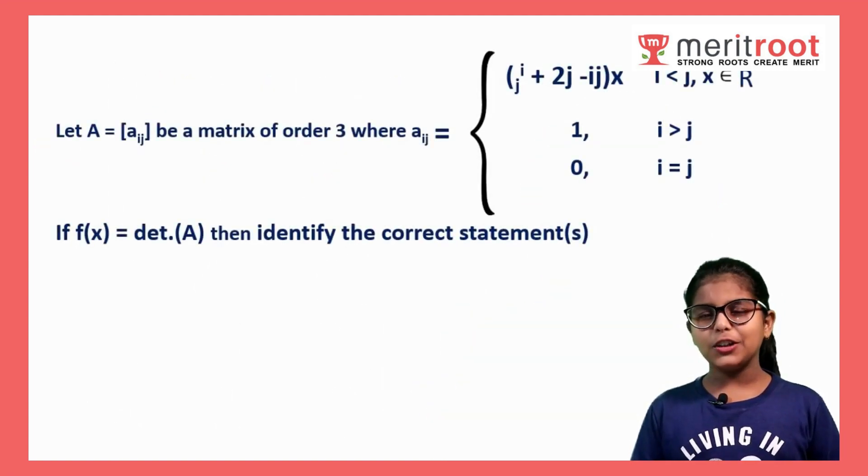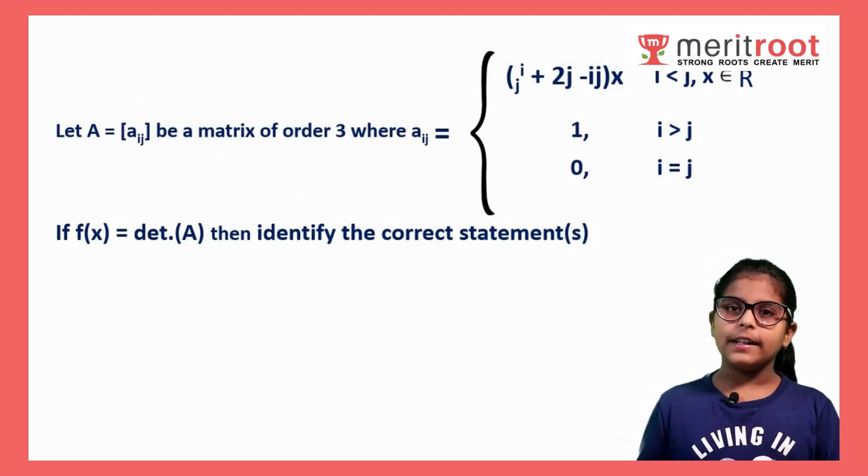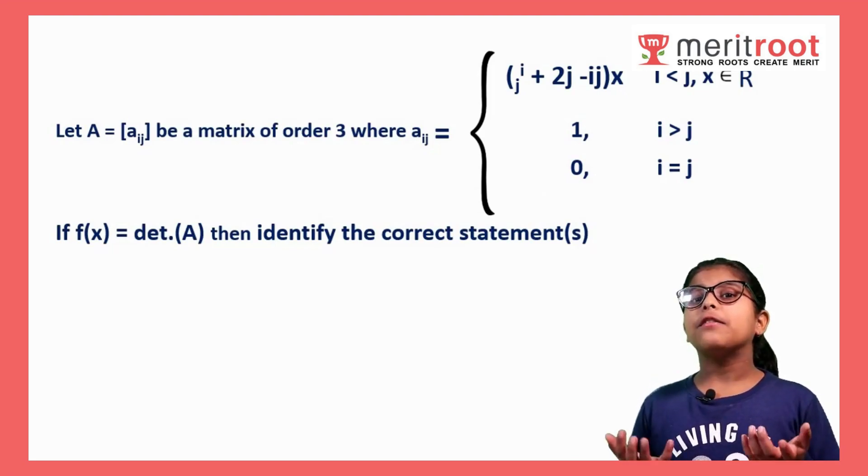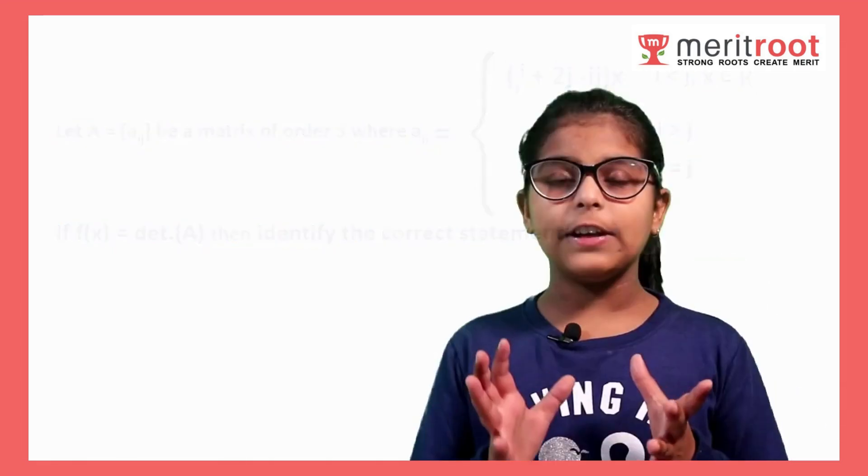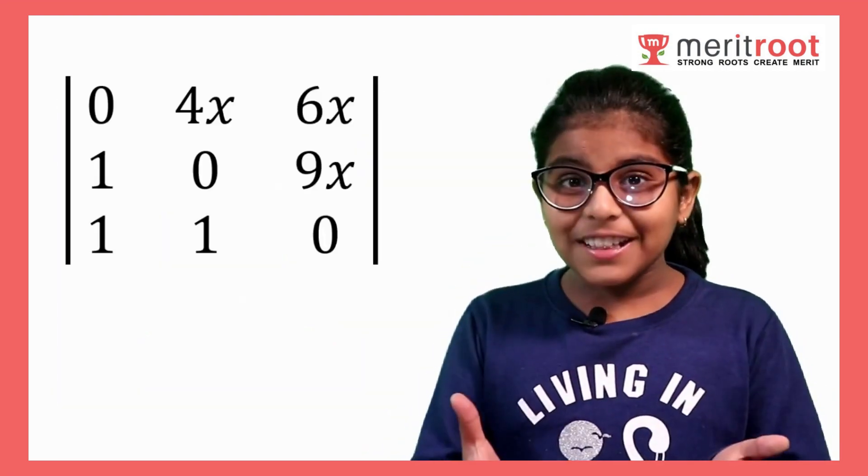According to the question, if f(x) is equal to determinant of A, then identify the correct statements. Okay, it means we have to find f(x) first, which is the determinant of A. If we solve this determinant, we get f(x) is equal to 36x squared plus 6x.